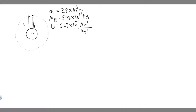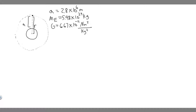So let's draw what's going on. We have the satellite orbiting around the Earth. The distance from the surface of the Earth to the satellite is 2.8 times 10 to the 6 meters. We also need the mass of the Earth, which is 5.98 times 10 to the 24 kilograms, and the gravitational constant G, which is 6.67 times 10 to the minus 11. You just need to know those.